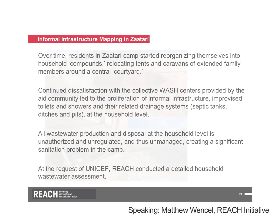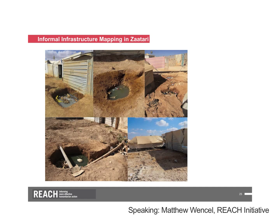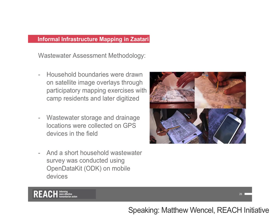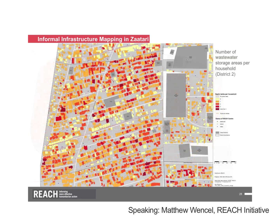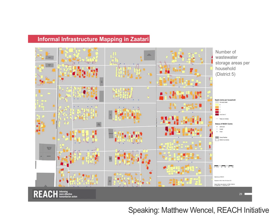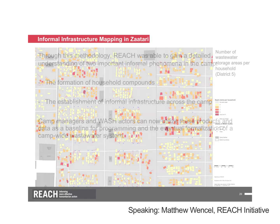For the methodology, we started with a participatory mapping exercise in which we mapped with camp residents to physically draw household boundaries over satellite image overlays, which were then digitized back in the office. We took GPS locations of wastewater storage and drainage locations and conducted a short household wastewater survey using ODK on mobile devices. A composite map shows the polygons digitized for each household as well as points and lines for the actual wastewater infrastructure. A more detailed view of District 2 — one of the most densely populated and most problematic parts of the camp — shows several households with well over two or three wastewater storage areas. District 5 is a far less dense portion of the camp and less problematic as a consequence.